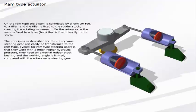Typical for RAM type steering gears is that they work with a much higher hydraulic pressure, they need an external rudder stock bearing, and the working angle is limited compared with the rotary vane steering gear.